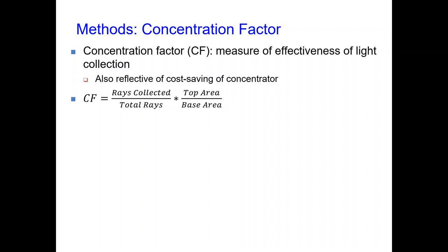After obtaining the light collection of our concentrators, we then calculated the concentration factor, or CF. This is a measure of how well the concentrator can collect light as well as how well it can save on the cost of the semiconductor at the base. CF is determined by multiplying our light collection ratio with the area of the top of the concentrator and then dividing by the area of the base. When our light collection ratio increases, the CF will increase as well. If the area of the top of the concentrator increases, meaning we can collect light from a wider area, the CF will also increase. However, if the base area increases, the CF will decrease.